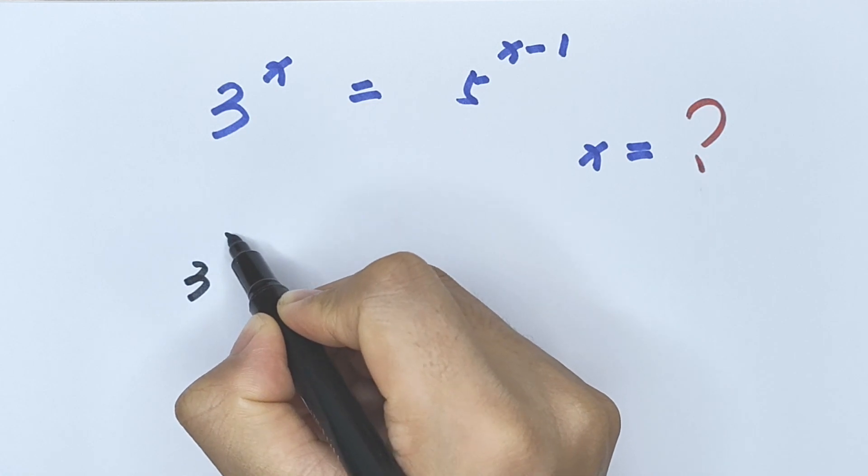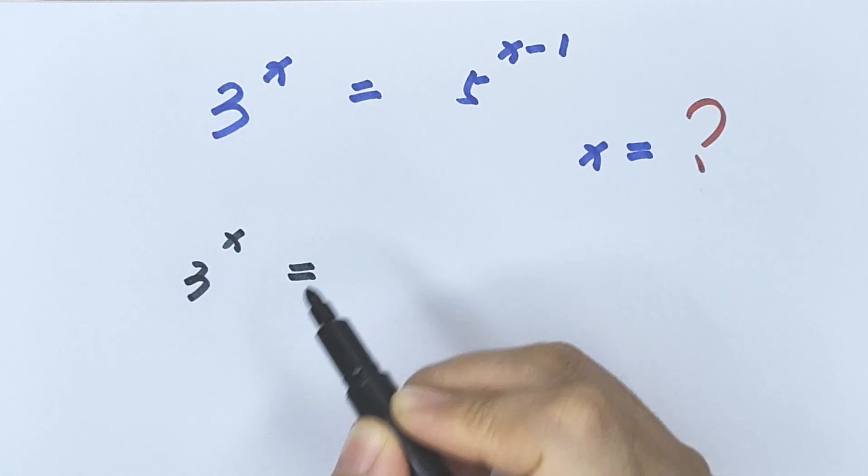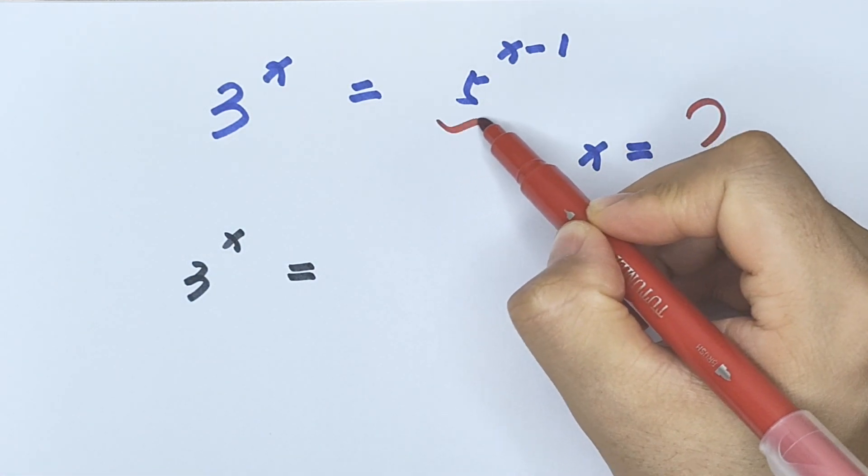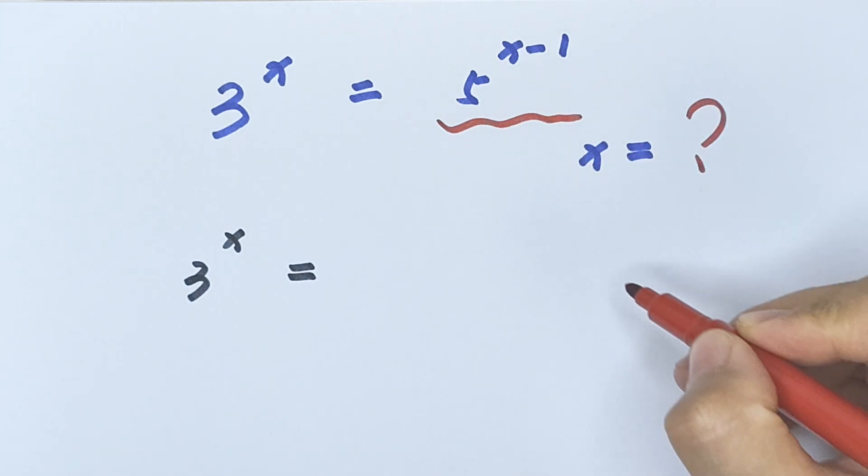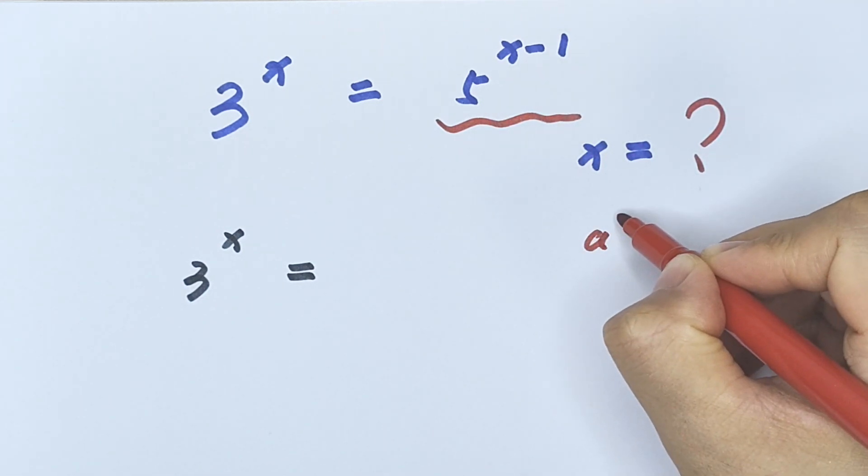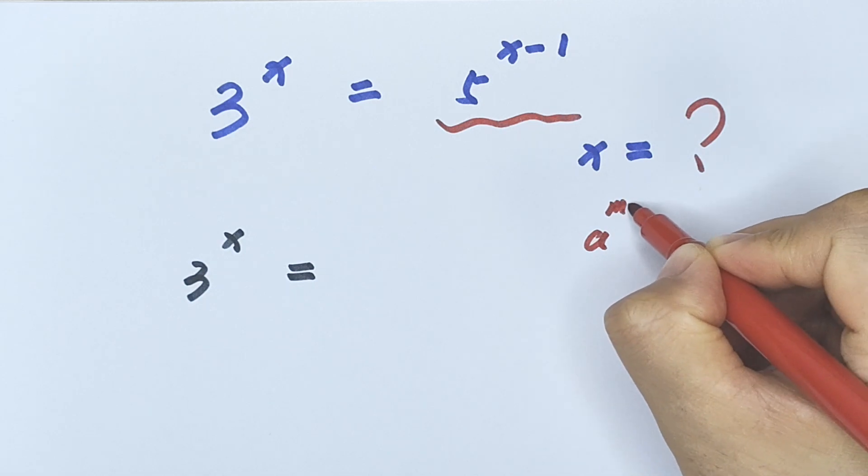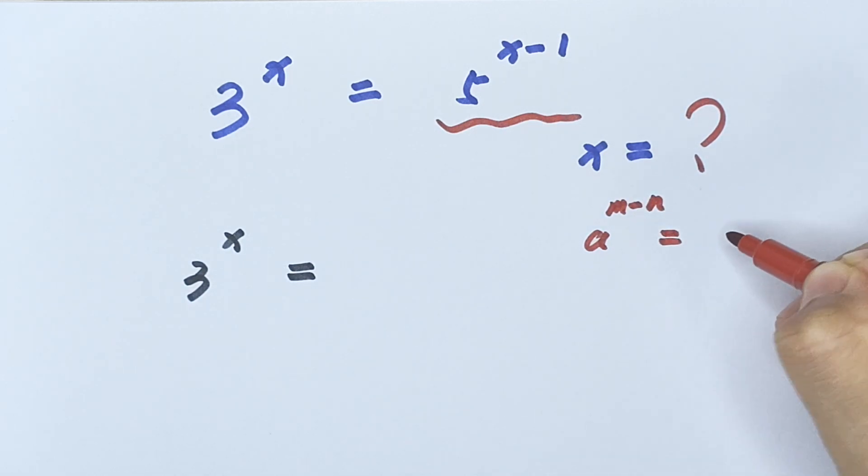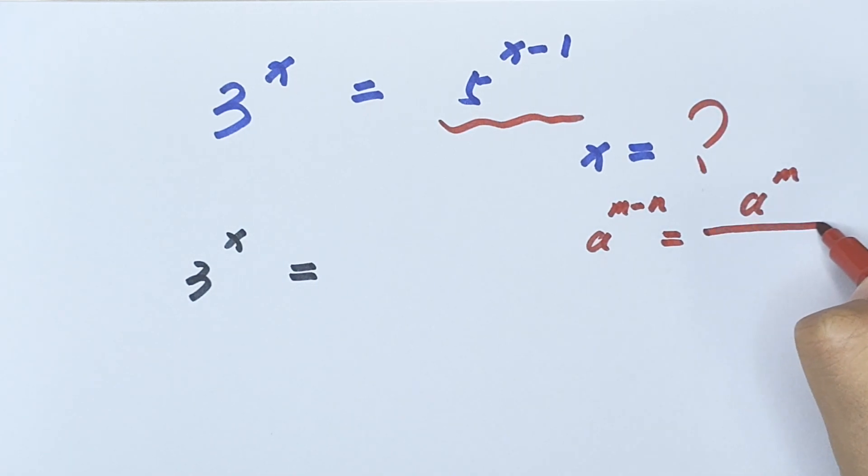3 to the power of x equals, we look at the right side. We know a to the power of m minus n equals a to the power of m divided by a to the power of n.